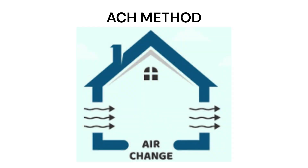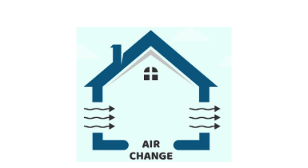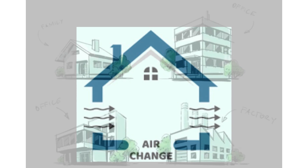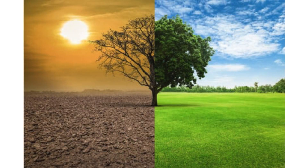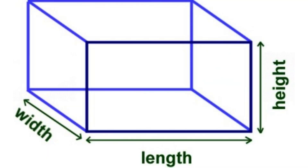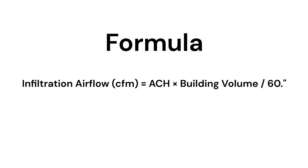ACH method. The ACH method calculates infiltration by considering how many times indoor air is replaced with outdoor air per hour. Here is how you can estimate it: determine the air changes per hour based on factors like building type and climate, measure or estimate the building volume in cubic feet, then use the formula to calculate infiltration airflow.